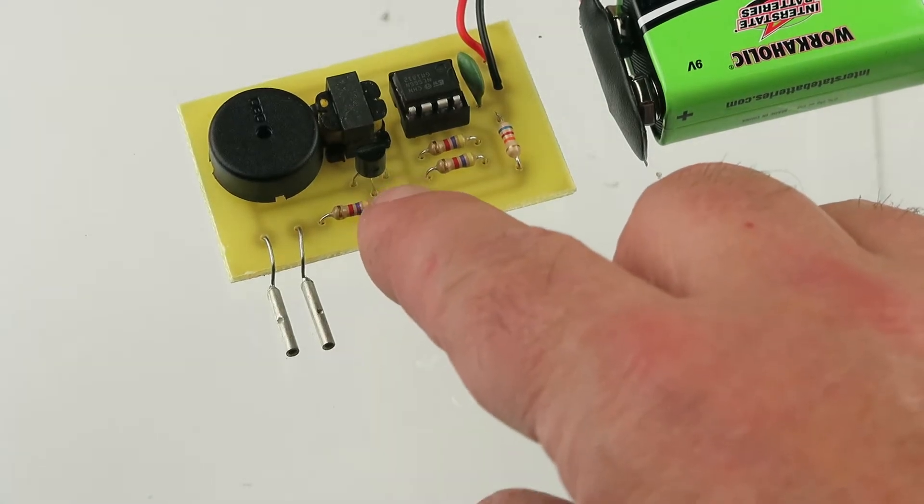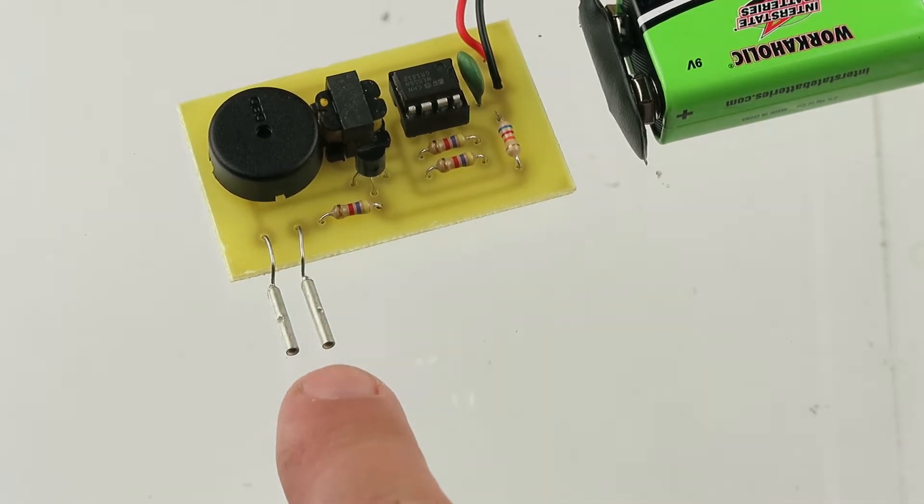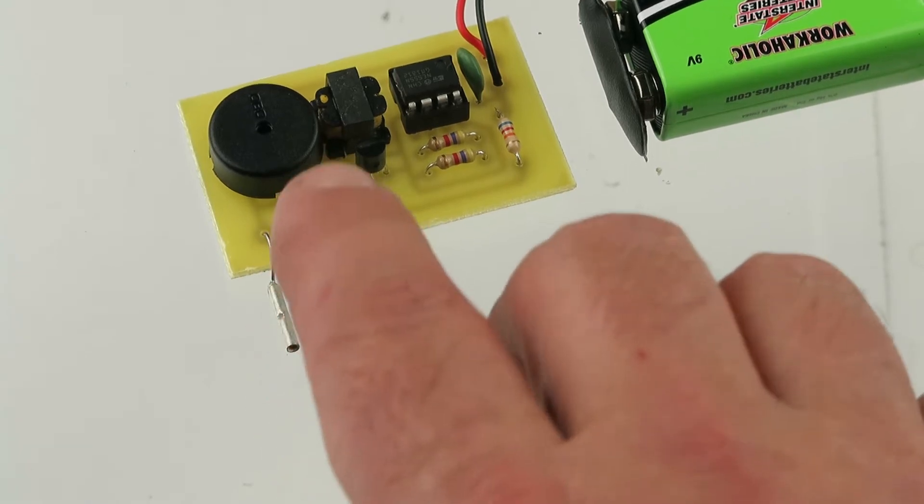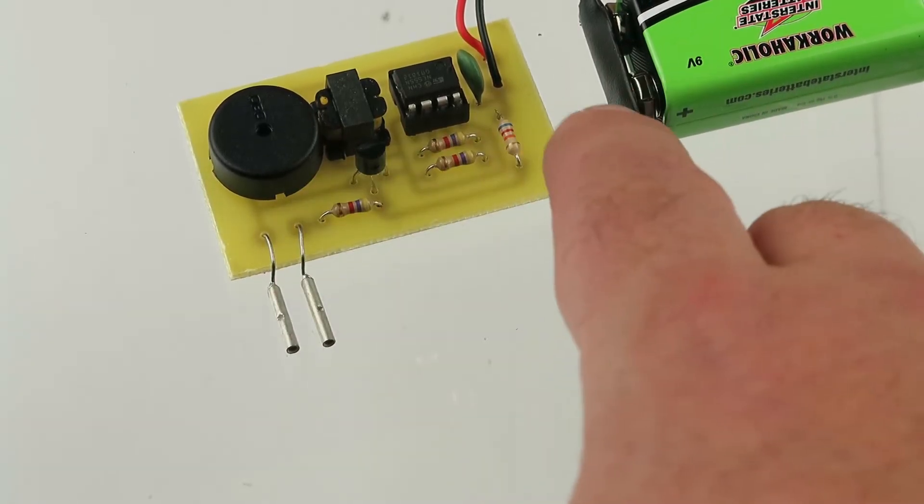There's a latching gate in here that allows, once water is detected by these two probes, the siren will go off. It will continue to go off until the battery is removed, and that's how it resets itself.